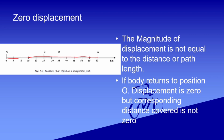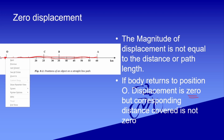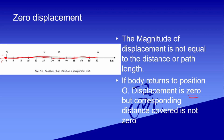Displacement ki definition: it is the shortest distance measured from the initial position of the body to the final position of the body. Is diagram mein O se C — that is 25 km east. And it is a vector quantity; its SI unit is also meter. Now, distance is always positive, but displacement: if the body went to A and came back to O, then initial position = final position = O, so displacement is zero. Displacement can be zero.